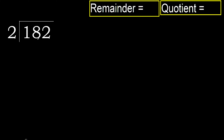182 divided by 2. 1 is less, therefore next. 18 is not less, therefore with 18.